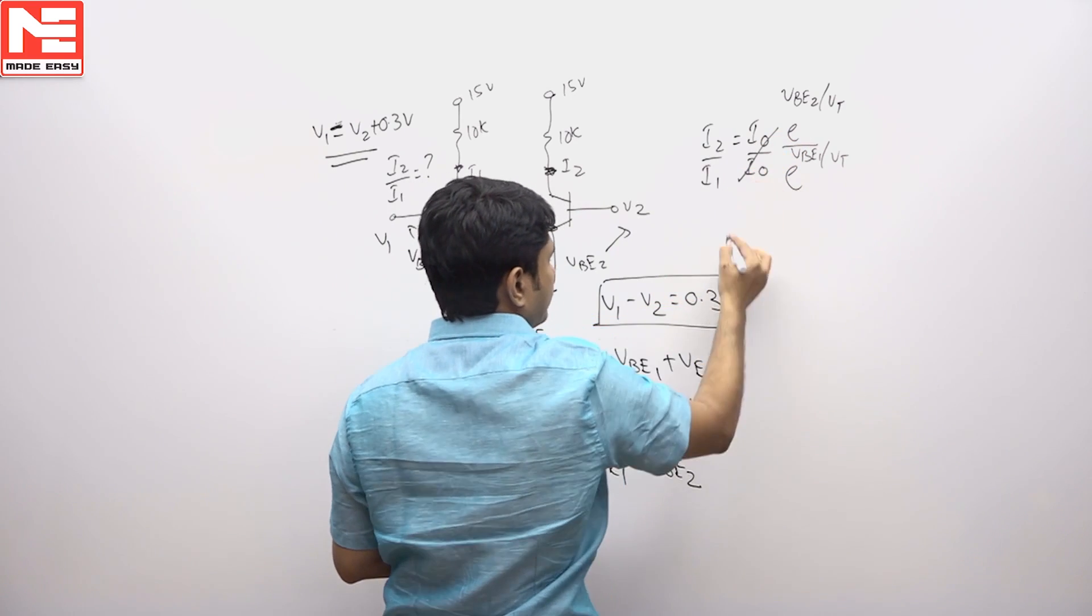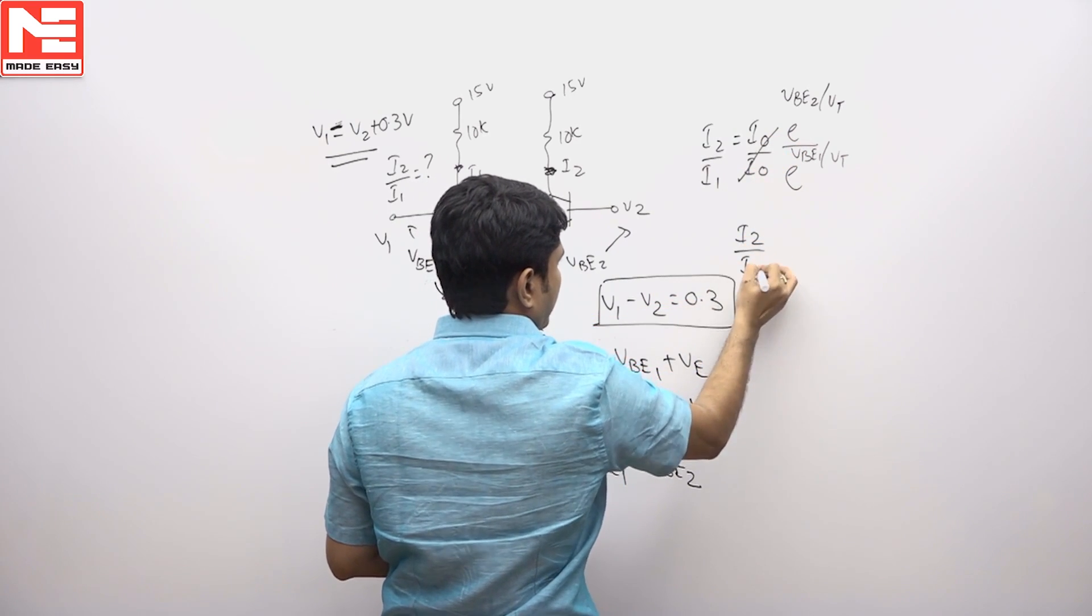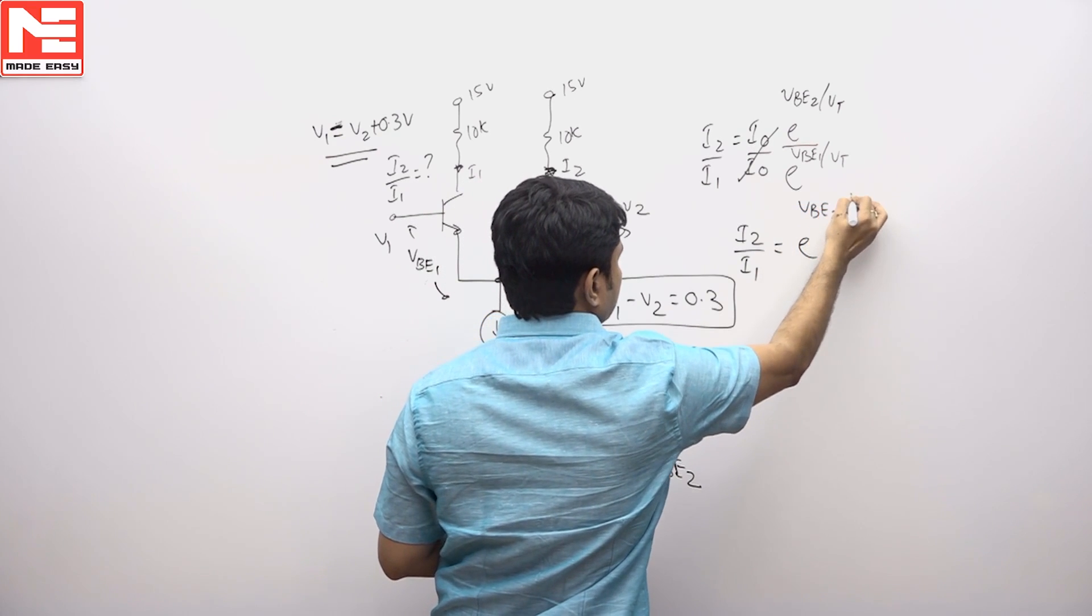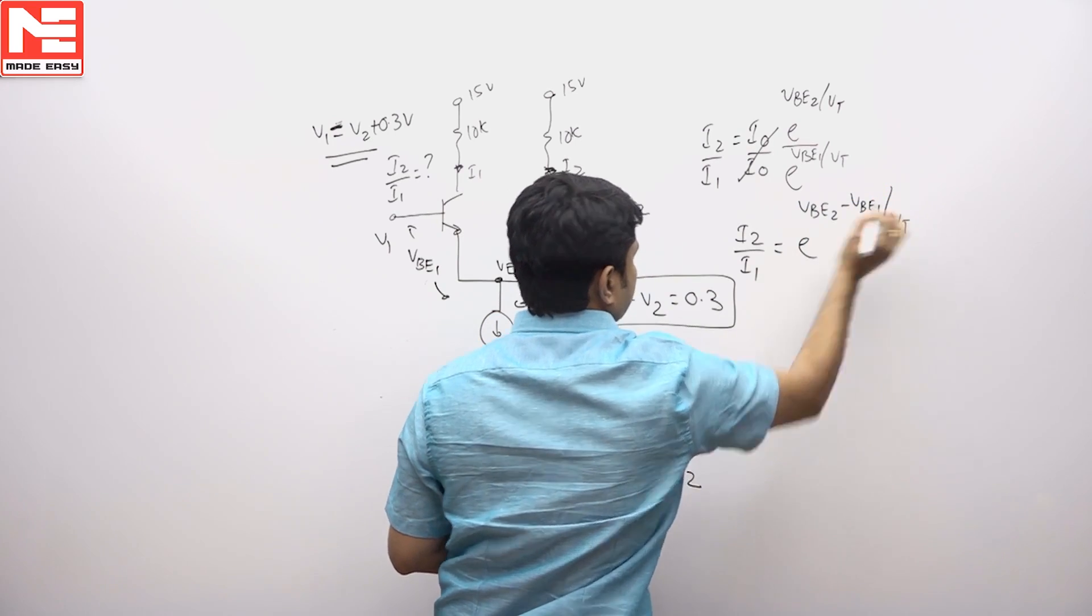So I think I0 will be cancelled, so I2 by I1 will be equal to E power VBE2 minus VBE1 divided by VT.